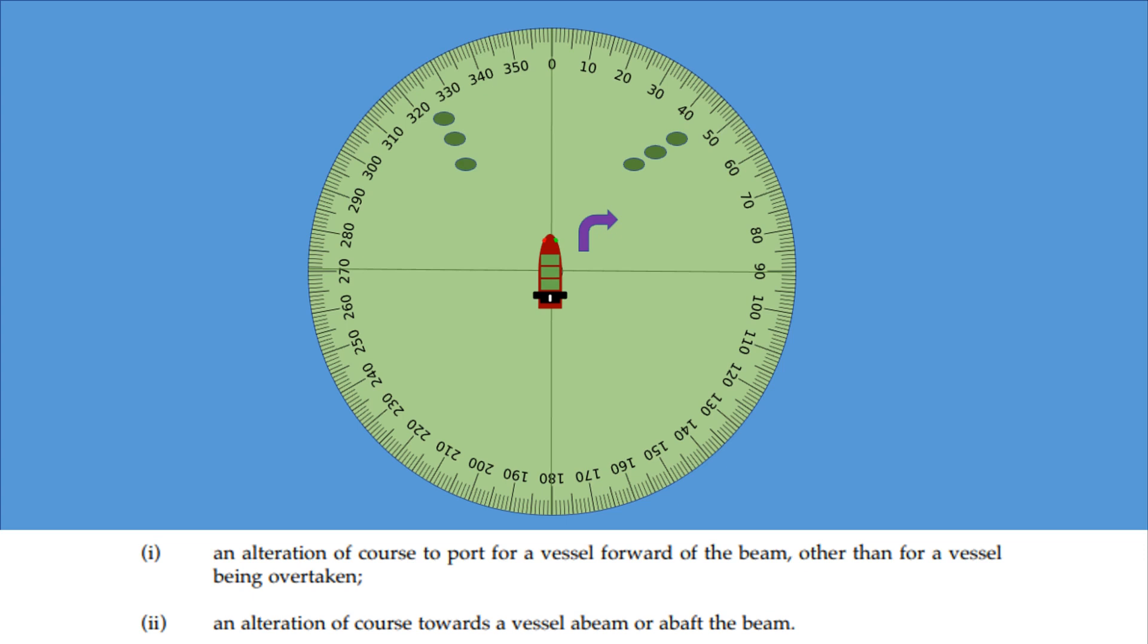Likewise on our port bow, three systematic plots, so we're obeying Rule 7, we would turn to starboard because we need to avoid turning to port for vessels detected forward of the beam. And both of those two quadrants apply to vessels other than for a vessel being overtaken. What that means is if we determine after systematically plotting using a radar plotting sheet that we are the overtaking vessel, then we need to apply Rule 13. We can go either side, port or starboard.